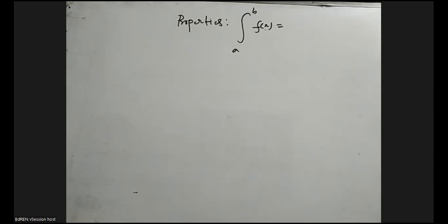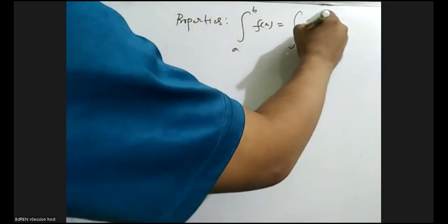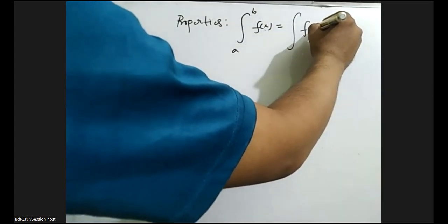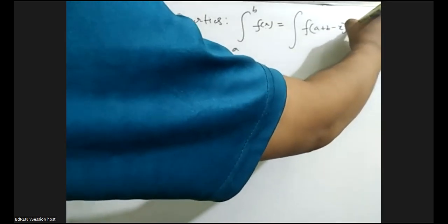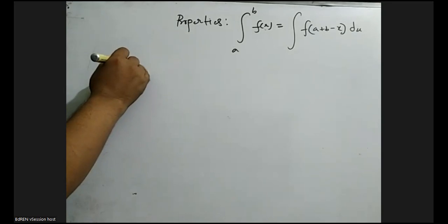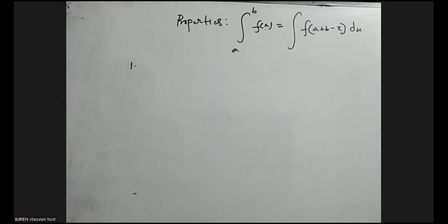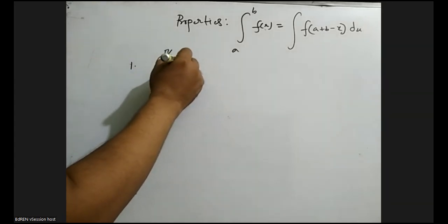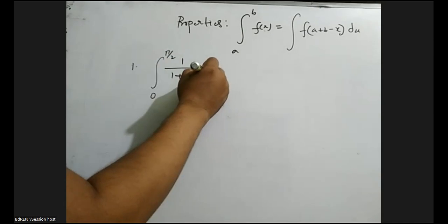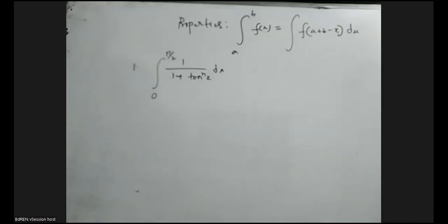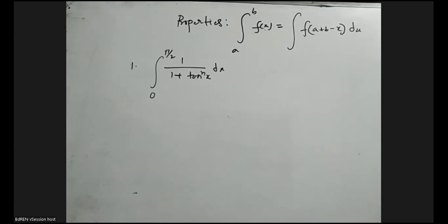Using the property: the integral from a to b of f of x equals the integral from a to b of f of a plus b minus x. Just using this formula, we can solve definite integrals. The first problem is the integral from 0 to π/2 of 1 divided by 1 plus tan to the power n of x, dx.